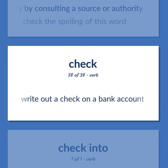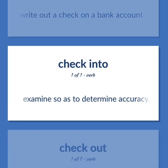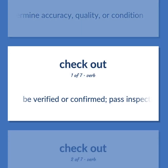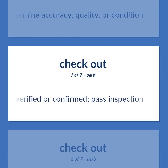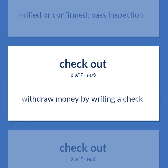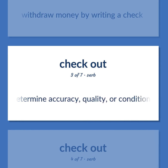Write out a check on a bank account. Examine so as to determine accuracy, quality, or condition. Be verified or confirmed; pass inspection. Withdraw money by writing a check. Examine so as to determine accuracy, quality, or condition.